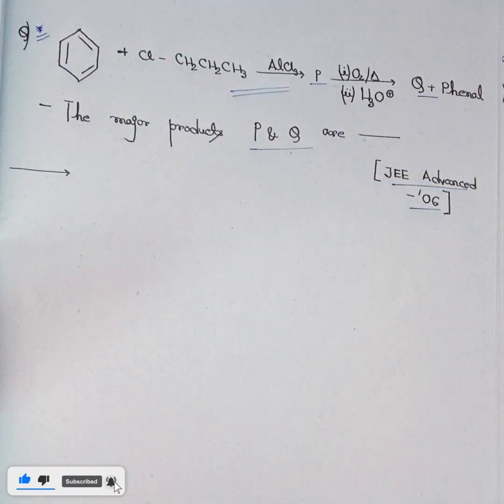In this addition, what occurs is stable carbocation formation. We know that 3 degree carbocation is the most stable.